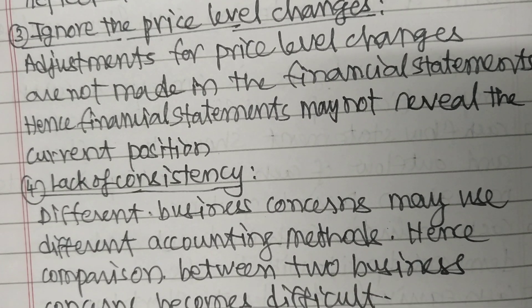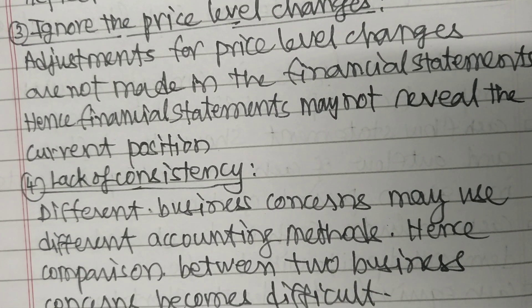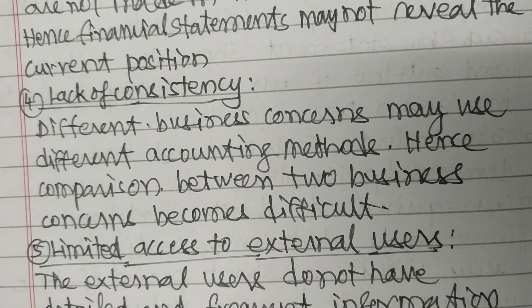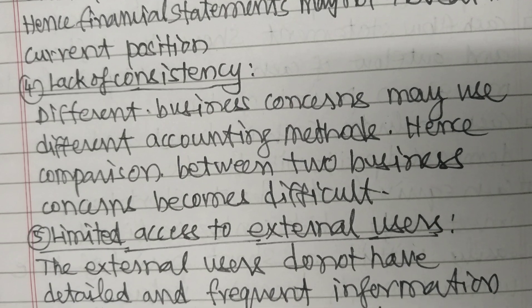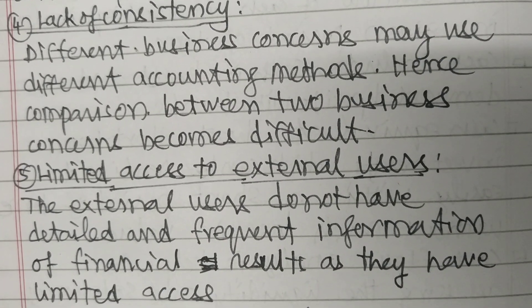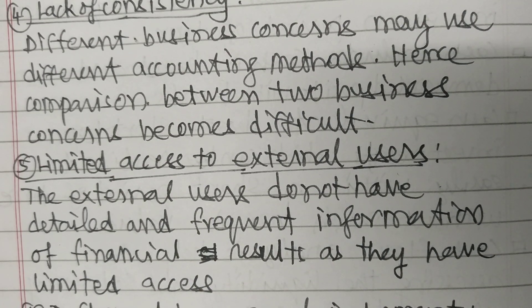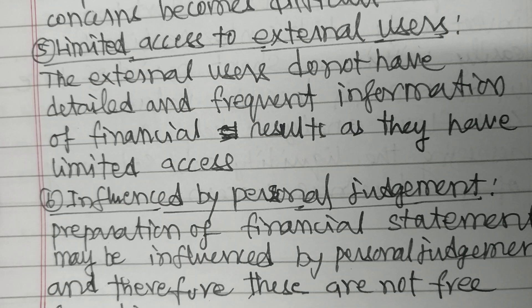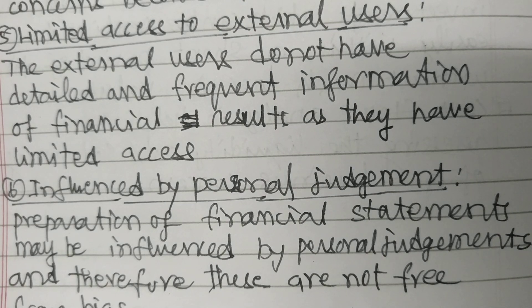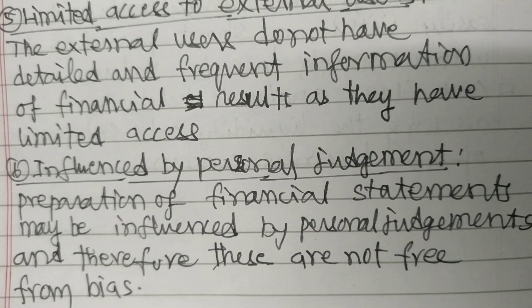Lack of consistency: Different business concerns may use different accounting methods. Hence, comparison between the two business concerns becomes difficult. Limited access to external users: The external users do not have detailed and frequent information of financial results as they have limited access. Influenced by personal judgments: Preparation of financial statements may be influenced by personal judgments and therefore these are not free from bias.